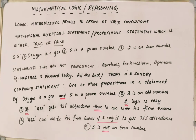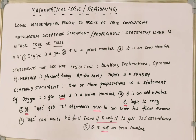For example: oxygen is a gas, 5 is a prime number, 2 is an even number. All of these statements are proven statements and are either true or false. Oxygen is a gas — true. 5 is a prime number — true. 2 is an even number — true. 3 is an odd number — also true.